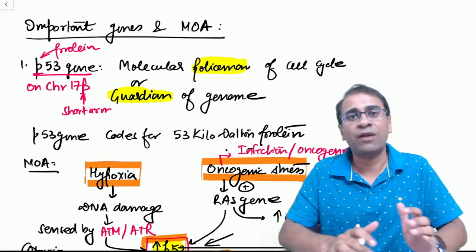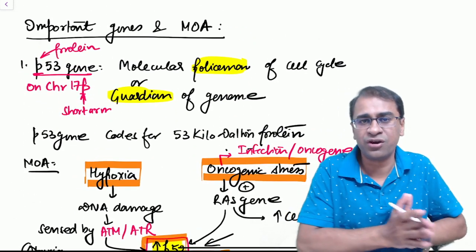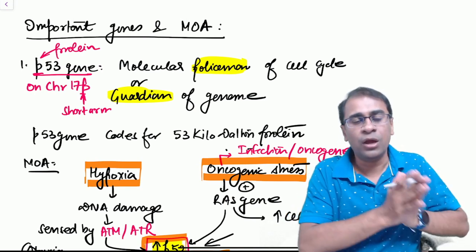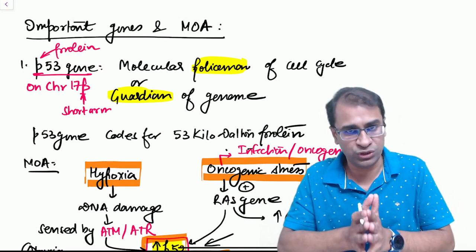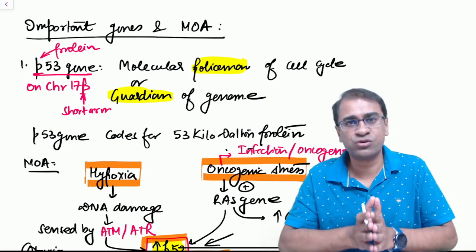In oncogene, we'll first understand what is a proto-oncogene and what is oncogene. Proto-oncogene is a normal gene, a physiological gene. When it becomes tumorous, it is then called oncogene. The tumor suppressor gene's normal function is to suppress a tumor.